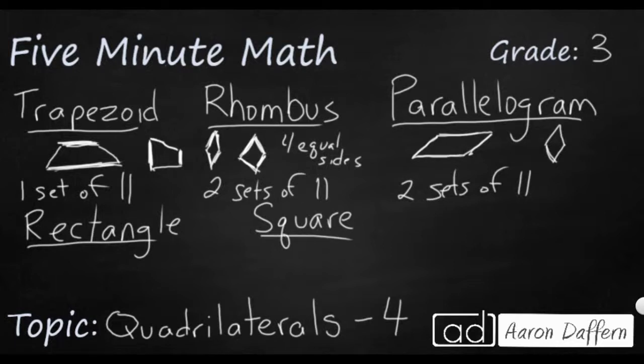So a rectangle has two sets of parallel lines, and it's got four right angles or square corners. So we know what a rectangle is. A rectangle's got two sets of parallel lines. They're not slanted or anything. And then you could put a little box in each corner if you wanted to, because that means there are square corners.